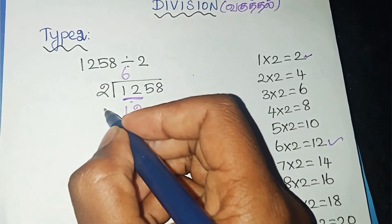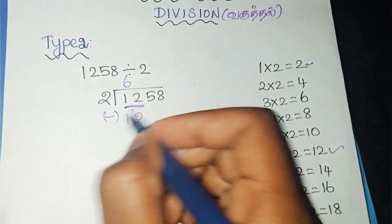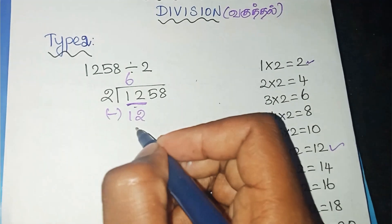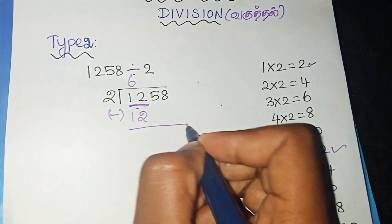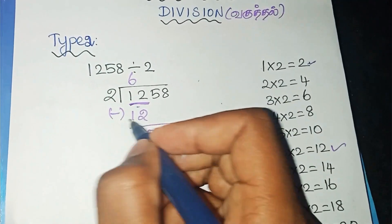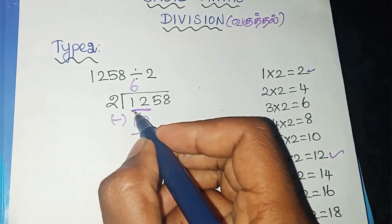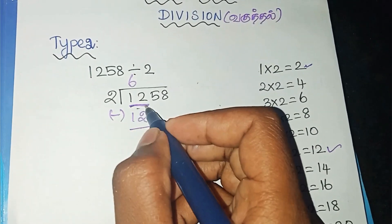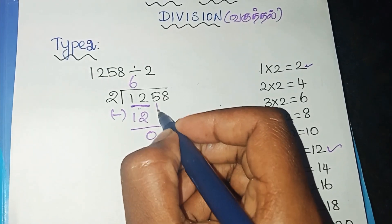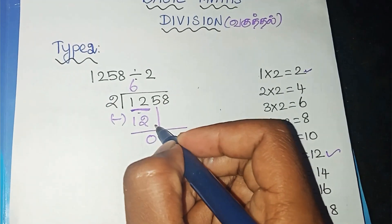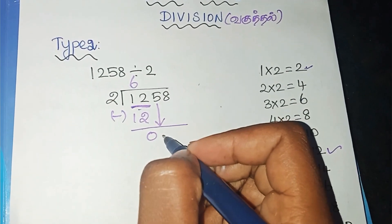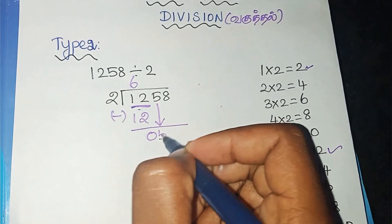What is the next step? You should subtract. 12 minus 12 is 0. Next, the first two digits are done. We should bring down the third digit. The third digit is 5.